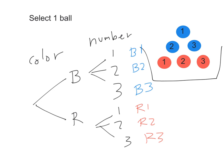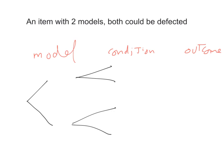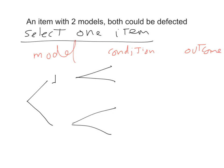That's a two-way classification of the same ball — remember, we are selecting only one ball, not two. Another example is when you have an item with two models: model one and model two, and both could be defective. The item could be a TV, a refrigerator, or anything you can buy. When we select one item, it can be model one or model two.